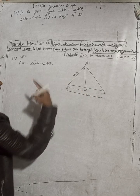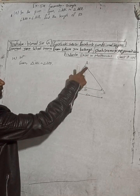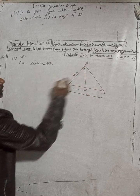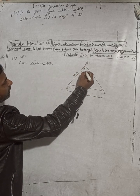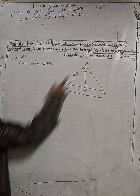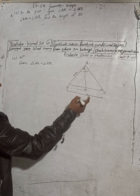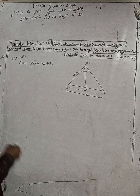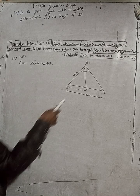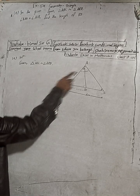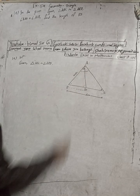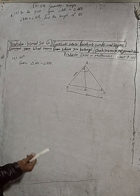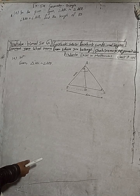ABC is the bigger triangle, so the third angle must also be equal. In the bigger triangle ABC, two angles are known, so the remaining third angle can be identified. In the similar triangle ABD, the remaining angle corresponds to the same angle in ABC.